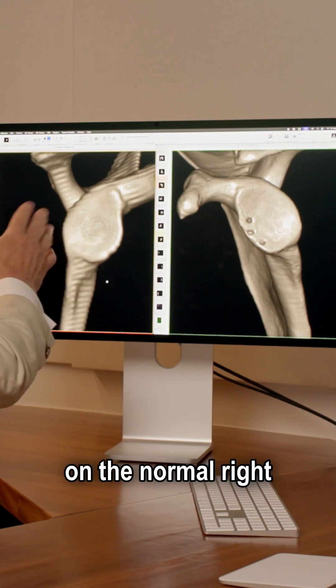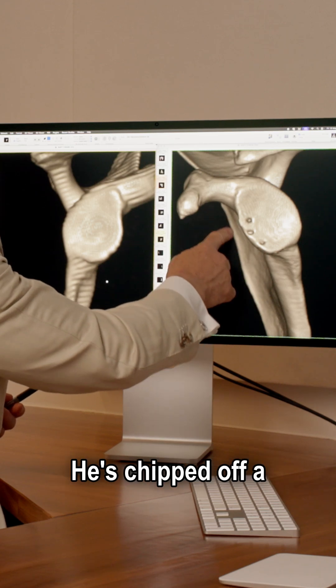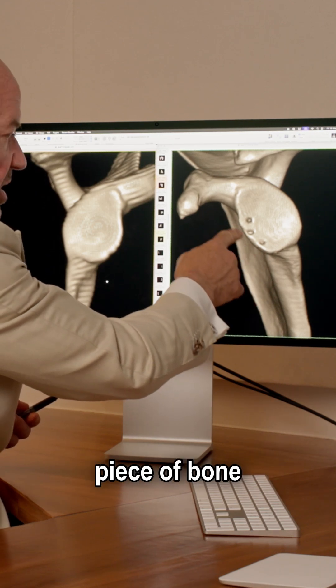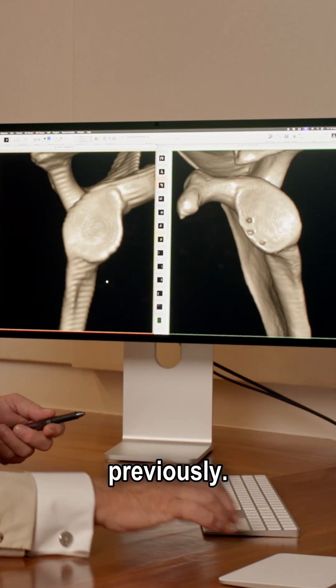You can see an obvious pear shape on the normal right shoulder. The uninjured right shoulder—on the left shoulder it's no longer pear-shaped. He's chipped off a piece of bone at the front of the shoulder here. You can see anchor points from the three anchors being placed previously.